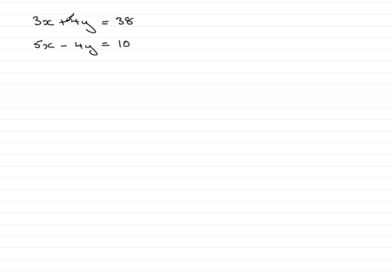If they had both said plus 4y then I could eliminate the y terms by subtracting. Or even if both of them had minuses, minus 4y minus 4y, I could still eliminate the y terms by subtraction.